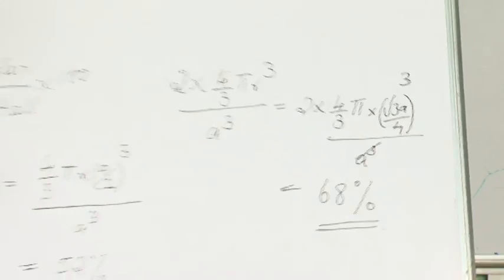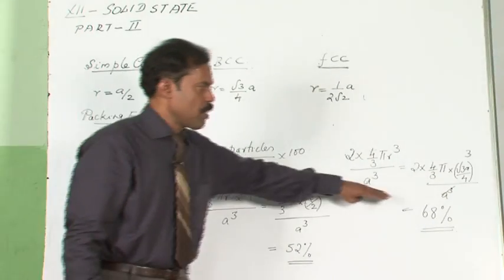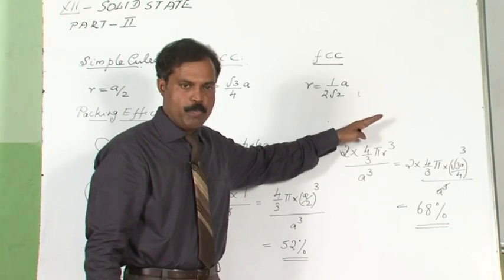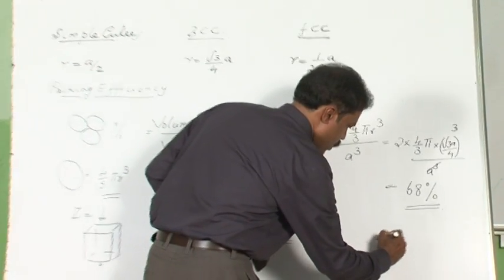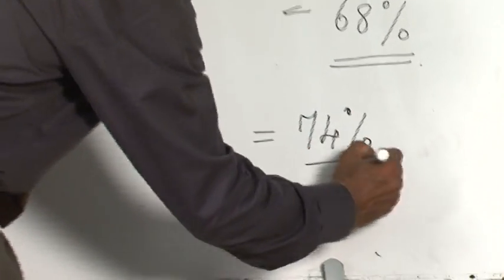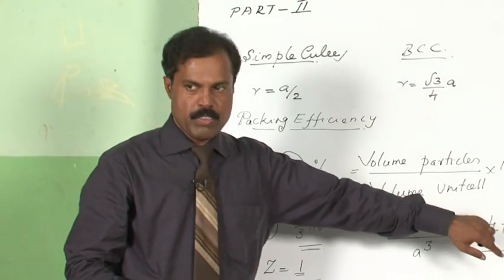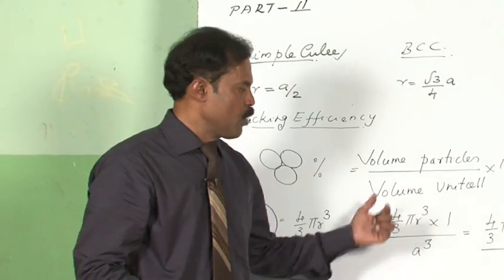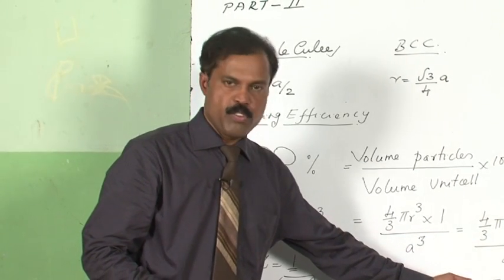In the same way, we work it out for FCC as well. I am leaving that task to you, but the answer is 74 percent. So as you can see, FCC is the most efficient at 74%, while simple cube is the least efficient with a packing fraction of only 52%.